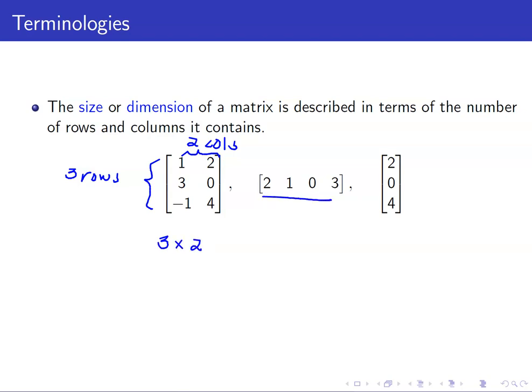For this matrix here, we have one row and how many columns? One, two, three, four. So we say that this is of size one by four. And for this matrix here, this has three rows and one column. So therefore, this is a three by one matrix.